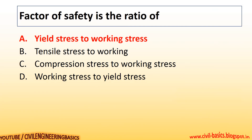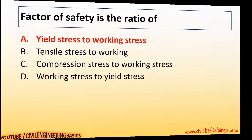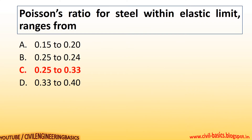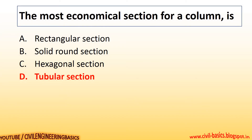Factor of safety is the ratio of yield stress to working stress. Poisson's ratio for steel with an elastic limit ranges from 0.25 to 0.33. The most economical section for a column is a tubular section.